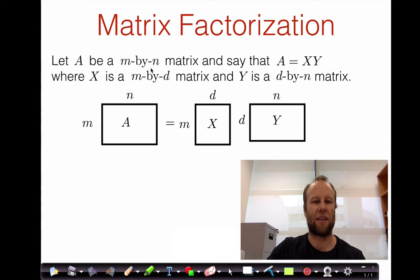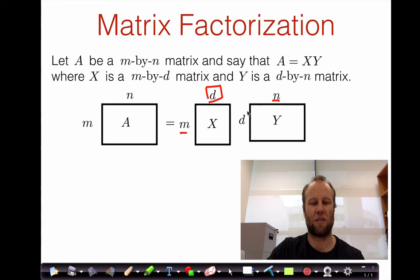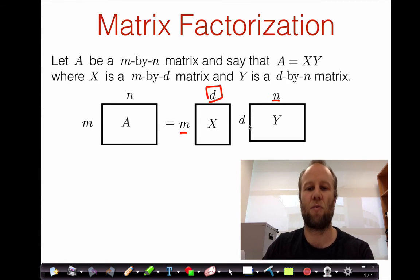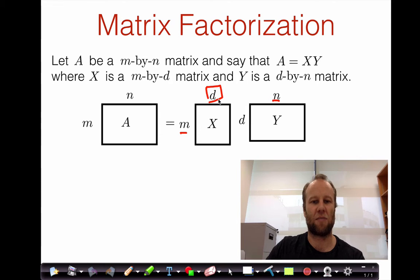Let's look at the sizes of the matrices involved in a matrix factorization. If A is an m by n matrix and A equals X times Y, then we know that X must have m many rows and Y must have n many columns. We don't necessarily know in advance what the value of d is — the number of columns of X and the number of rows of Y — but those two must be equal. We can have different factorizations of A with different values of this parameter d.